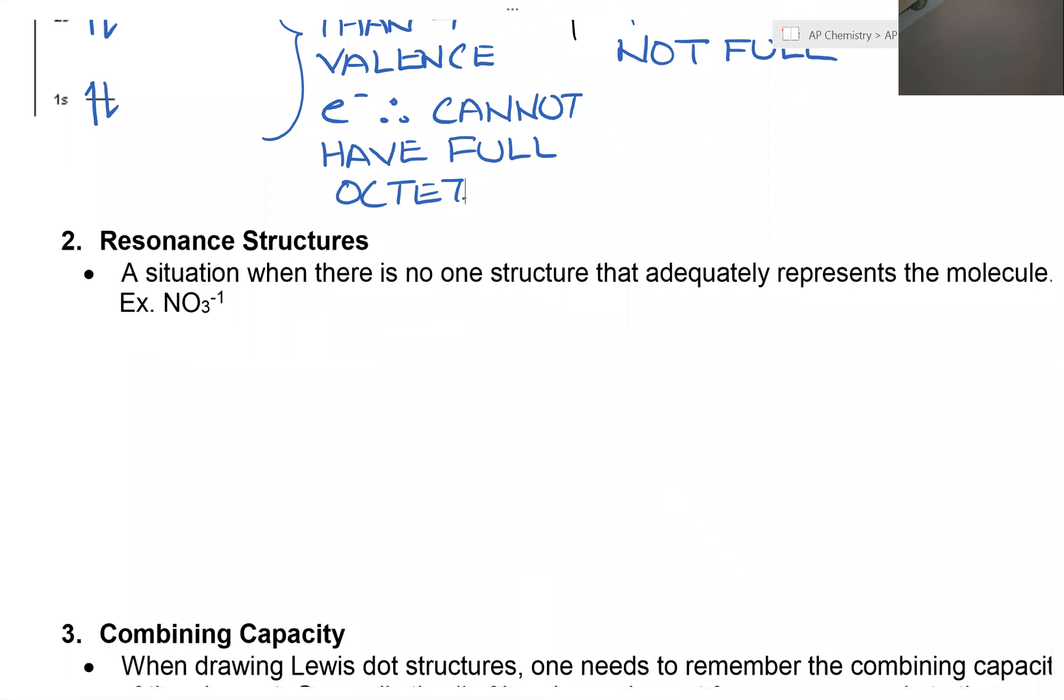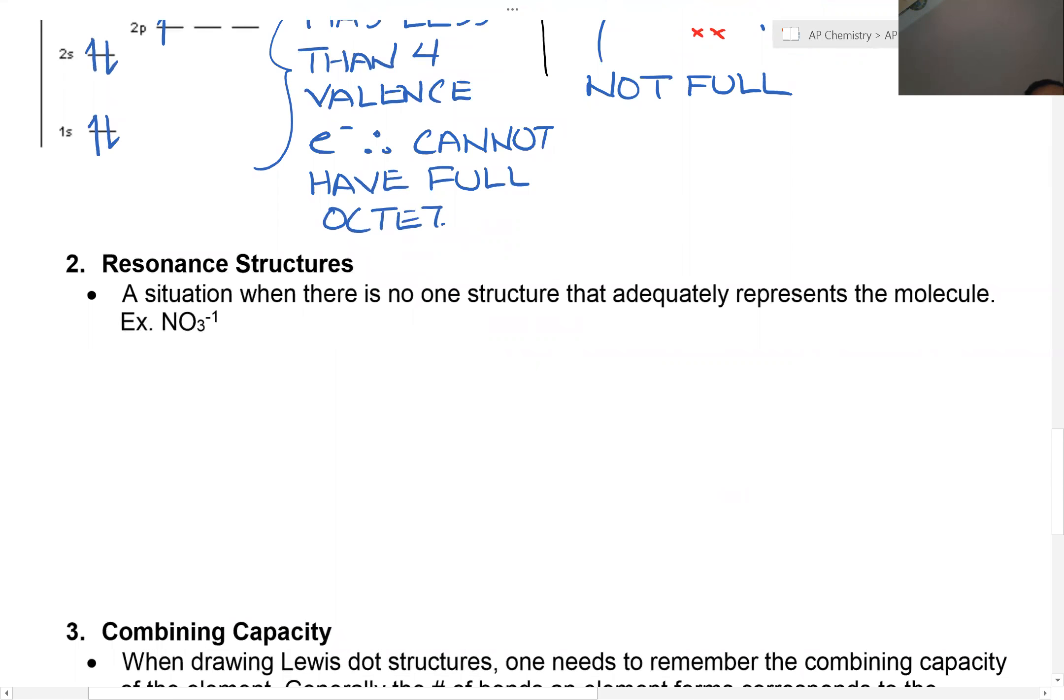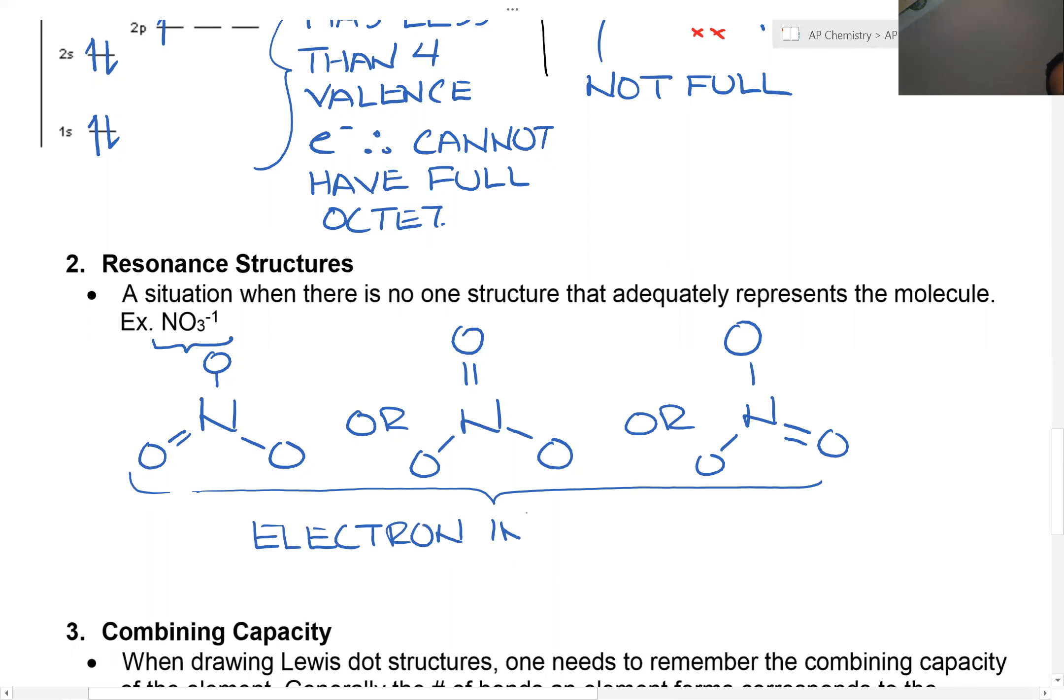Another thing you should be aware of is resonance structure. It's a situation where there's no one structure that adequately represents the molecule. For example, let's say NO3. NO3 can be represented three ways. It could be O, O, O, or N double bond O, O, O, O, or N, O, O, O. The reason why you can represent it three ways is because the electron in the double bond moves, is moving.